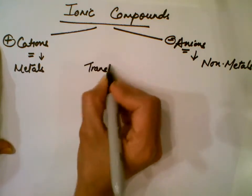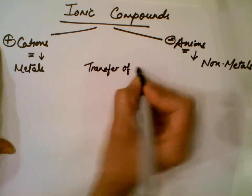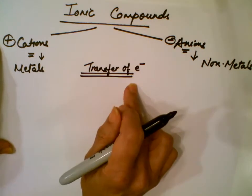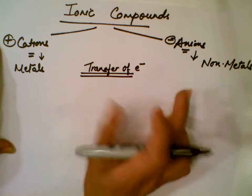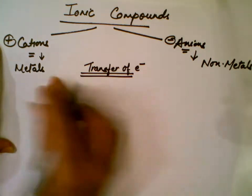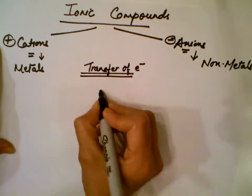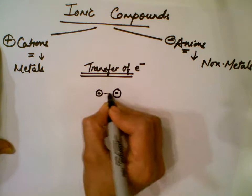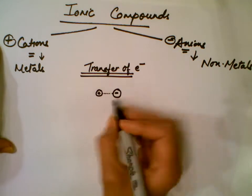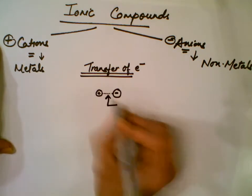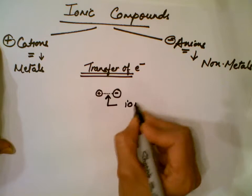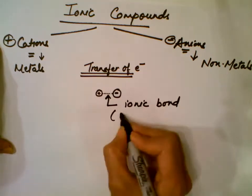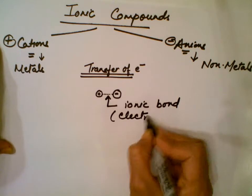Remember: ionic bonding involves transfer of electrons. Now let's talk about the forces that keep these ions together. There is something that keeps the positive and negative ions together, and that bond is called an ionic bond. Another name for ionic bond is electrovalent bond.